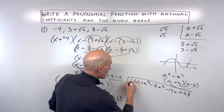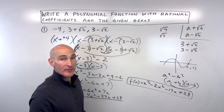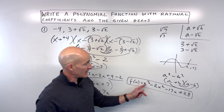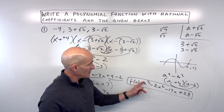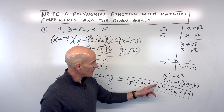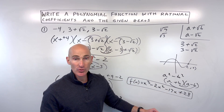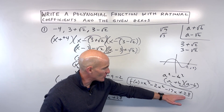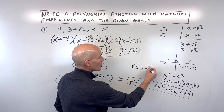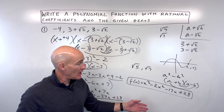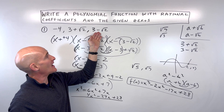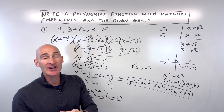And that's your polynomial function. Notice that the coefficients — the numbers in front of the variables — are rational. You have one, negative two, negative 17, or 28. You don't see any square roots like square root of five or square root of seven. Those are not in our polynomial function, and the reason is because we have these zeros as conjugate pairs.